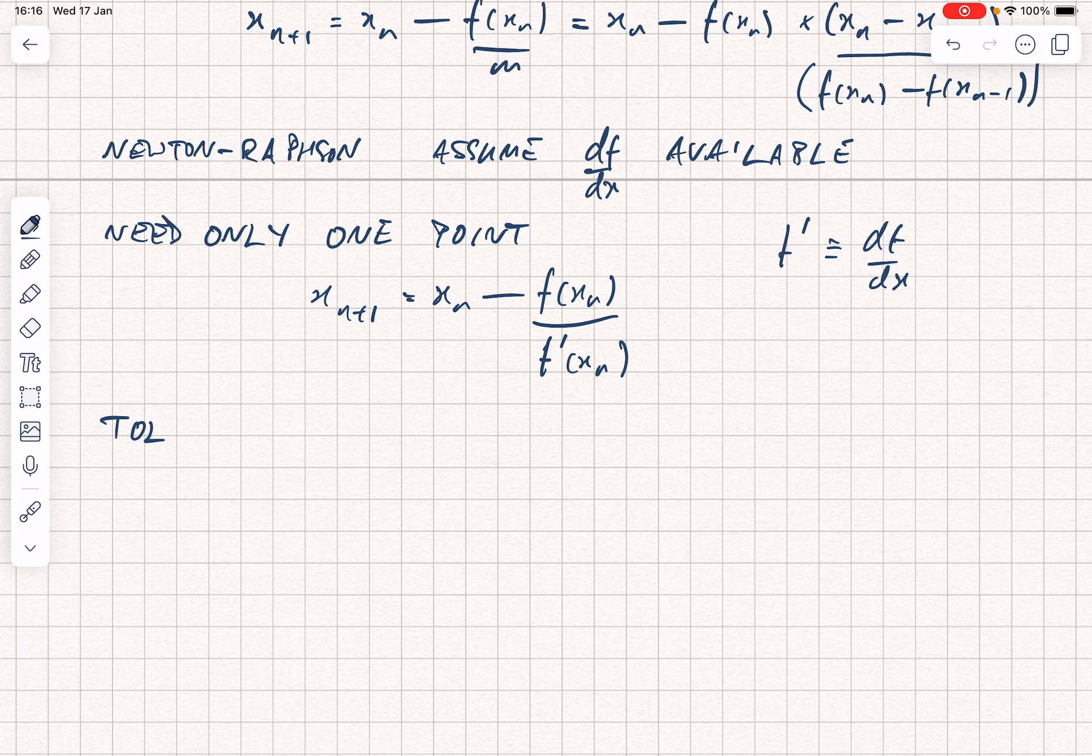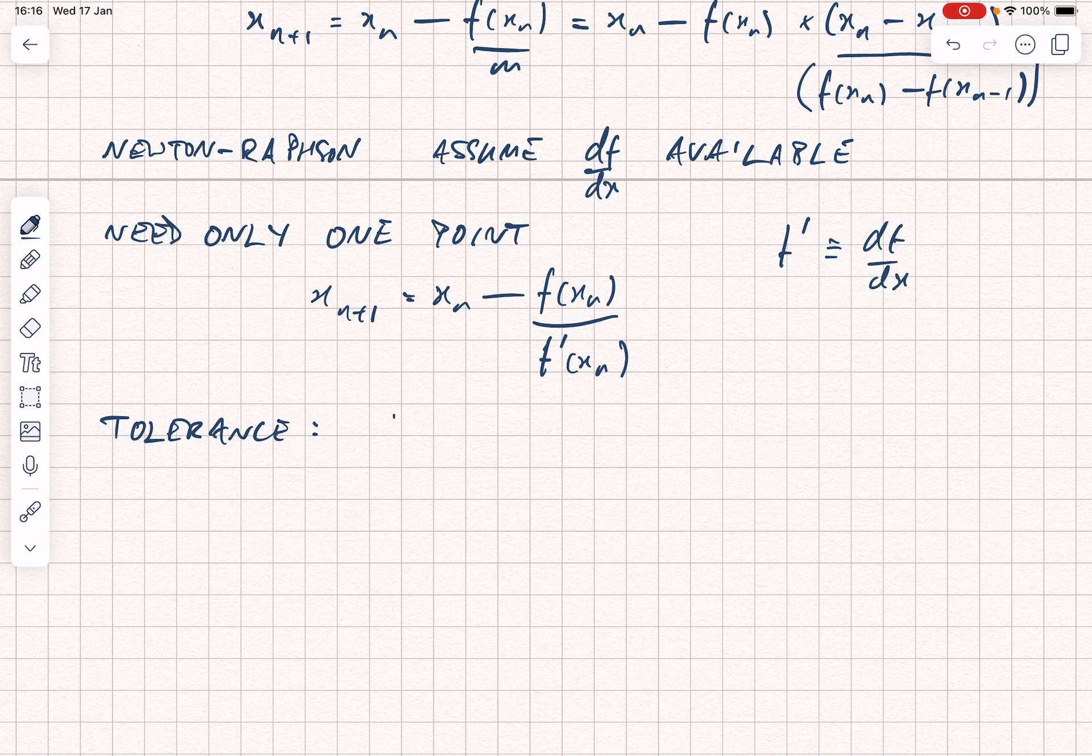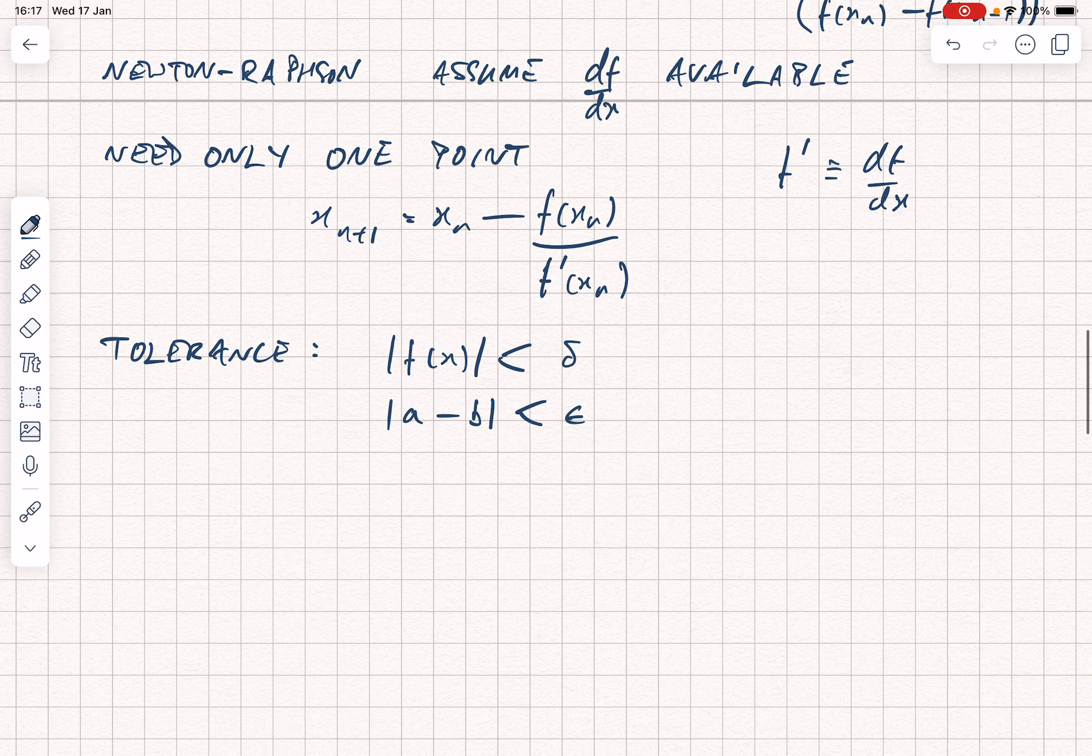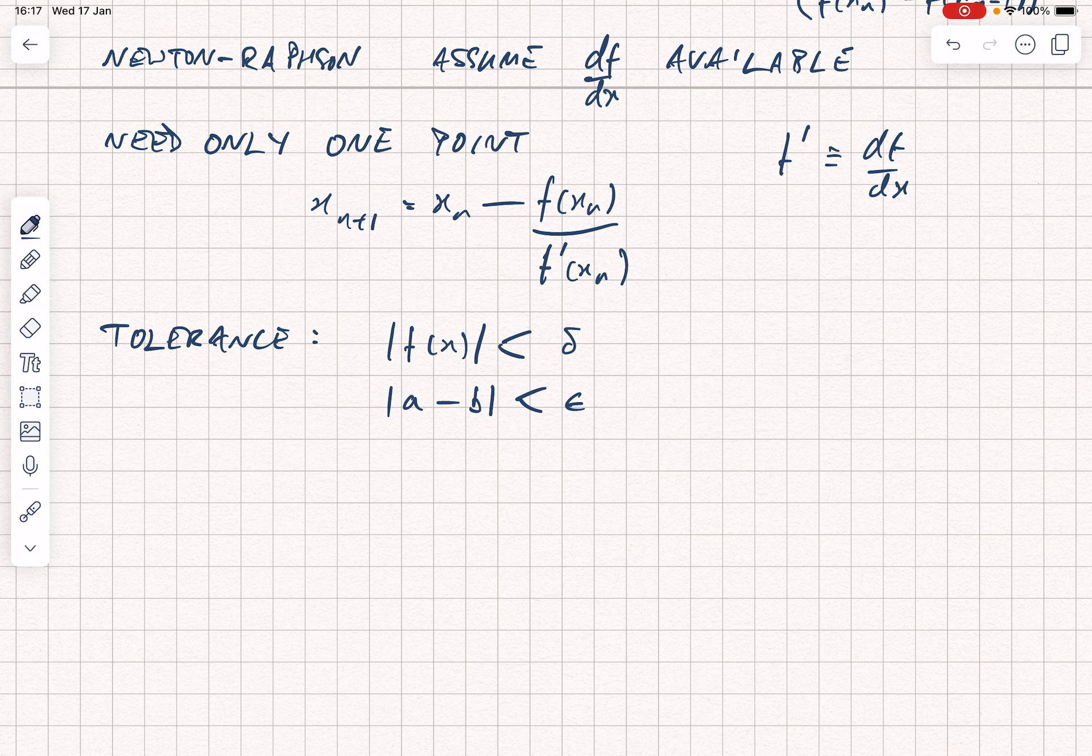There is always the question of the tolerance or the stopping criterion. You can potentially say that the magnitude of f(x) must be less than some amount, delta. That allows you to judge exactly where you've got to. You could argue, for the secant method, that you want the magnitude of a minus b to be less than some other small amount, epsilon. Those two are similar. It depends on whether you're worried about how close the two points are or the magnitude of your function. And, of course, you should always have some kind of maximum iteration count.